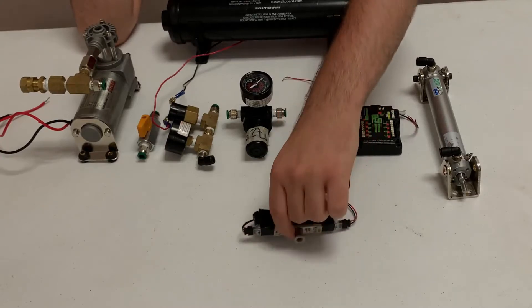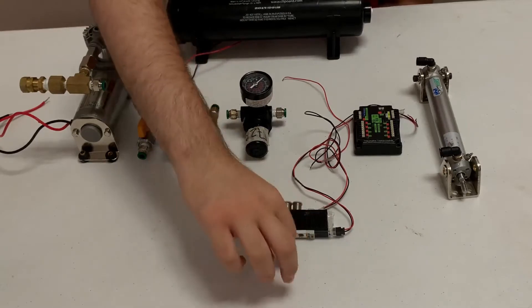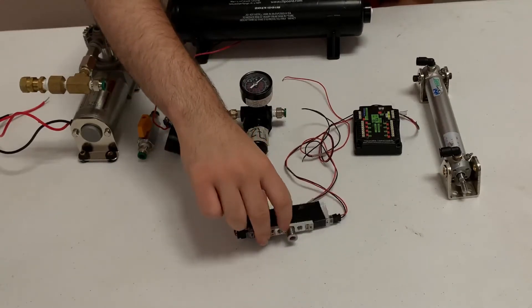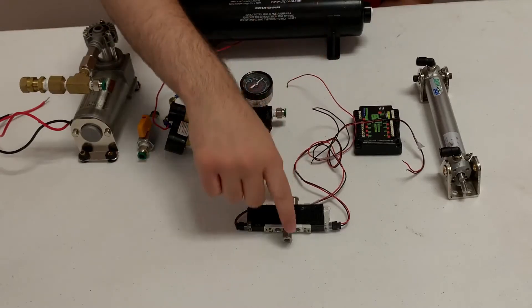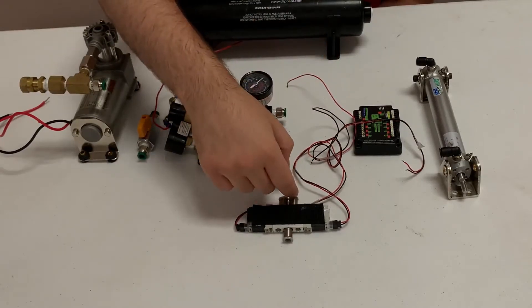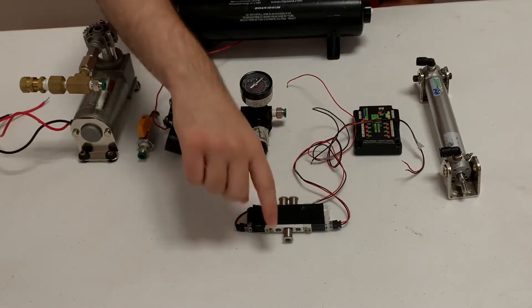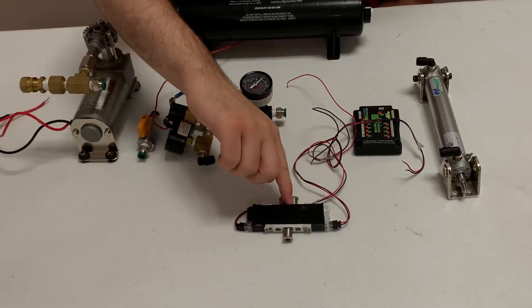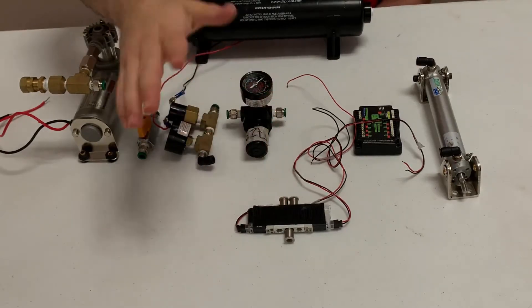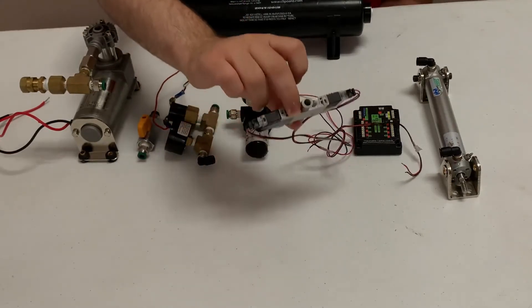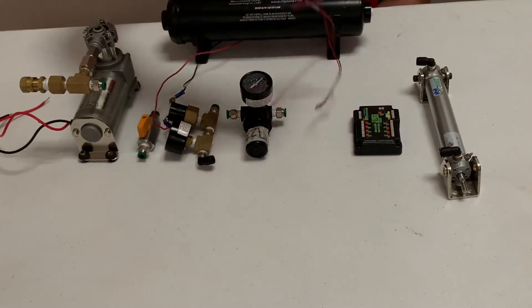Next up is our solenoid valve. Basically, it takes in air through one input, this one in this case. Then depending on which signal I send to which wires, it will redirect that airflow to either one of these ports or these outputs. Air comes in here and I can direct the airflow to go either out through here, up through here or out through none. This is very useful for pistons, which I'll show in just a second.